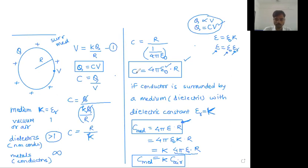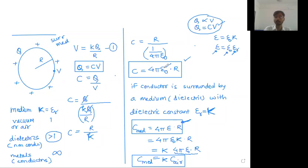The formula for capacity of a spherical conductor is 4 pi epsilon zero R, since shape matters. You can remember the formula containing epsilon zero. If there is a medium, just replace epsilon zero by epsilon.